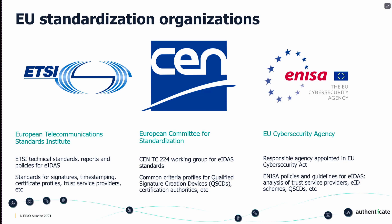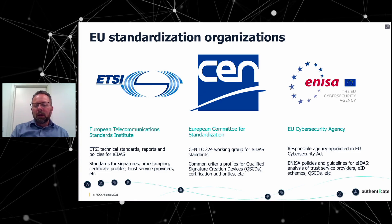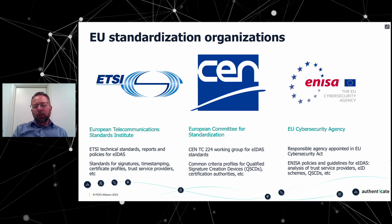In the middle, we have CEN, the European Committee for Standardization. There is one working group called CEN Technical Committee 224, which works on the eIDAS standards. CEN has developed, in particular, common criteria profiles for qualified signature creation devices, so-called QSCDs, and policies for certification authorities. On the right-hand side, we have ENISA, the EU cybersecurity agency, responsible for the EU Cybersecurity Act. ENISA has created policies and guidelines for eIDAS, like analysis of trust service providers, analysis of EID schemes, QSCDs, and so forth.